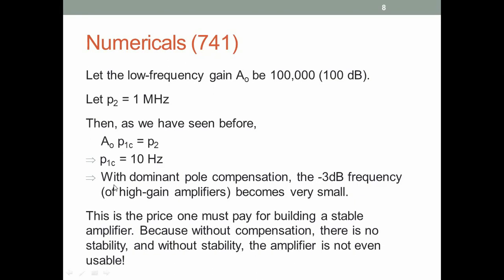When we do dominant pole compensation, the minus 3 dB frequency becomes very small — 10 hertz is a very small number, which is not ideal. Nobody wants an amplifier with a 3 dB frequency of 10 hertz. But without compensation, the amplifier does not even work — it is useless. In order to make it useful, we have to do this compensation. This is a price we must pay to have an op-amp that at least works and does not oscillate under negative feedback.